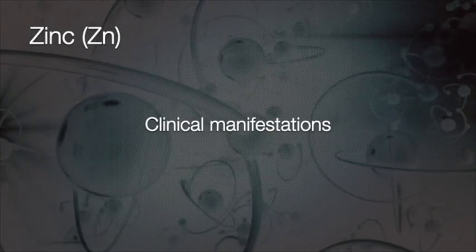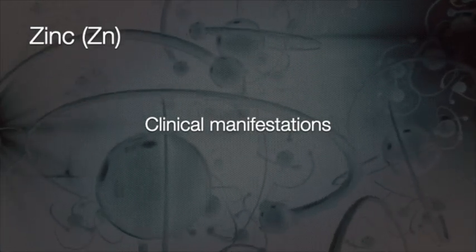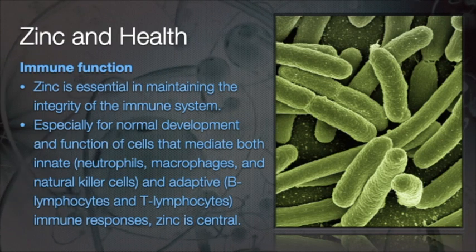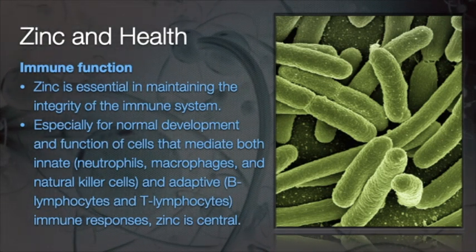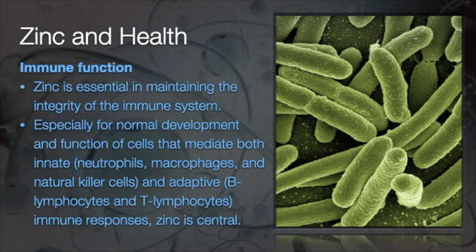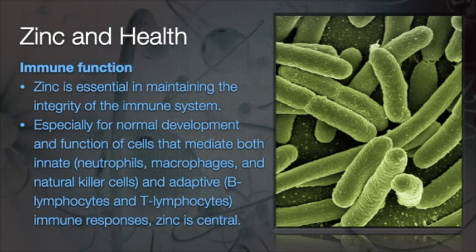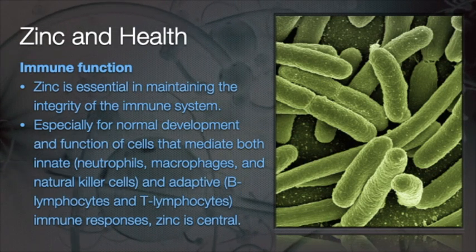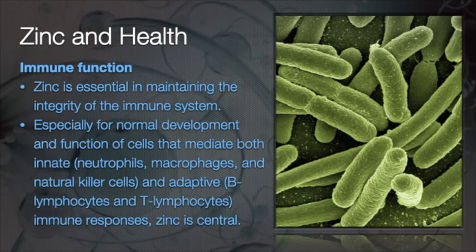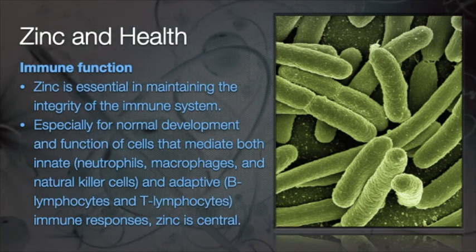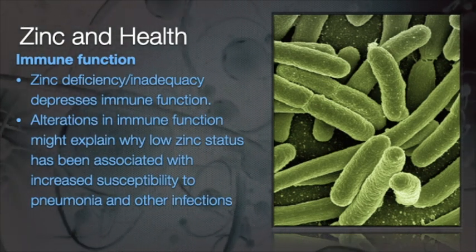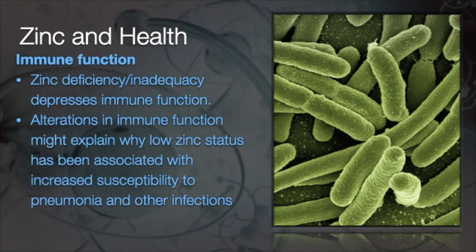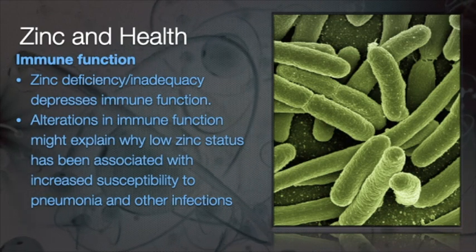What are the clinical manifestations of low Zinc or Zinc deficiency in the human body? Zinc is essential in maintaining the integrity of the immune system, especially for normal development and function of cells that mediate both innate and adaptive immune responses. Innate immune cells include neutrophils, macrophages, and natural killer cells — the first line of defense. Adaptive immune cells include B lymphocytes and T lymphocytes, which are important for the production of antibodies. Zinc deficiency or inadequacy depresses immune function, which may explain why low Zinc status has always been associated with increased susceptibility to pneumonia and other infections.